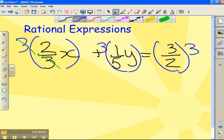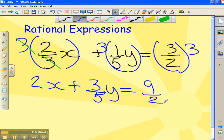Now I have 2x, 3 over 5, y equals 9 over 2. One denominator down, 2 to go.